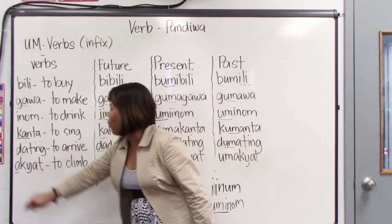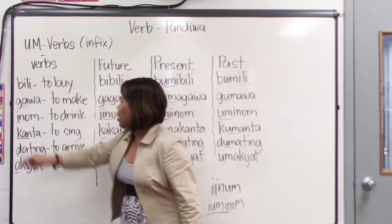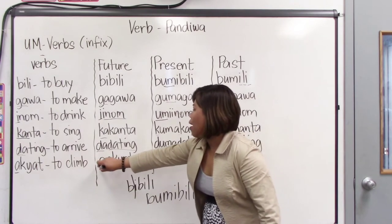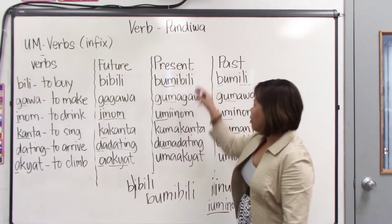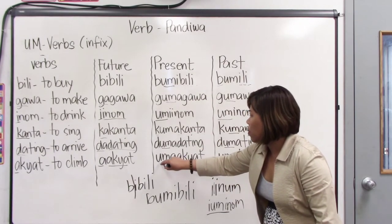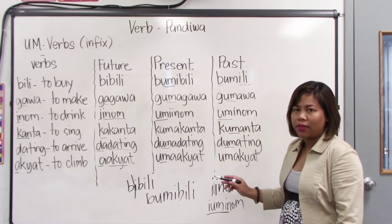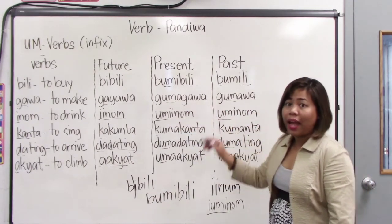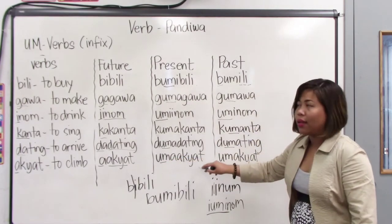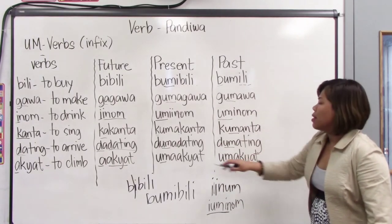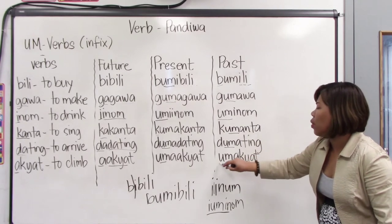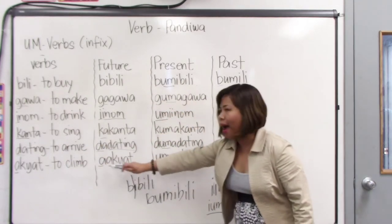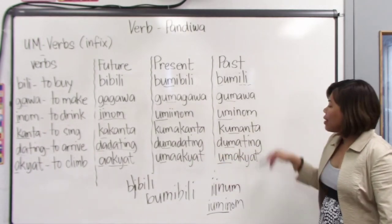The last one starts with a vowel like inom. Akyat means to climb. Take the first syllable: a-akyat — that's your future tense. For the present, you don't insert um after the first letter of aakyat because it's a vowel — you can't read it. So you use um not as an infix but as a prefix: um-a-akyat. Past tense is the same — um-a-akyat. So: base akyat, future a-akyat, present um-a-akyat, past um-a-akyat.